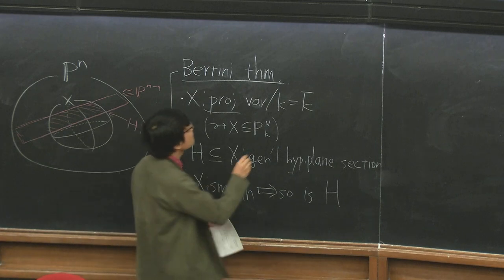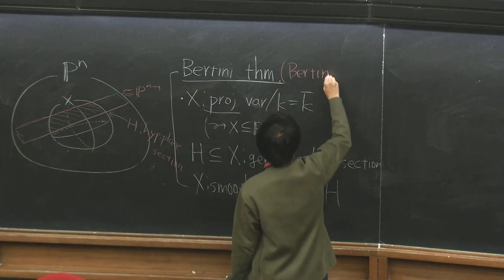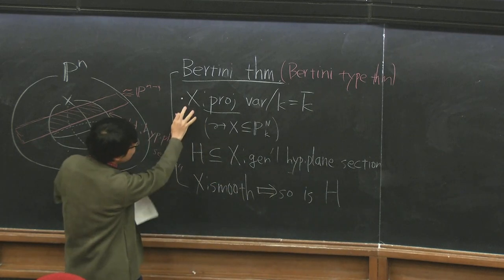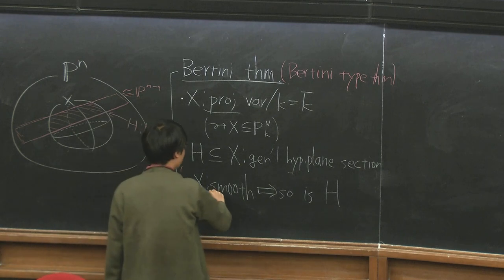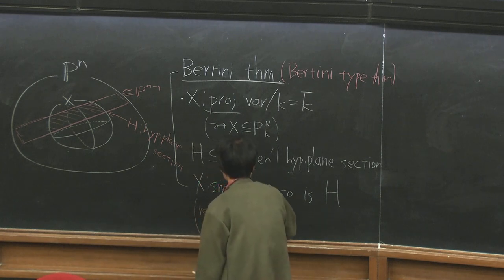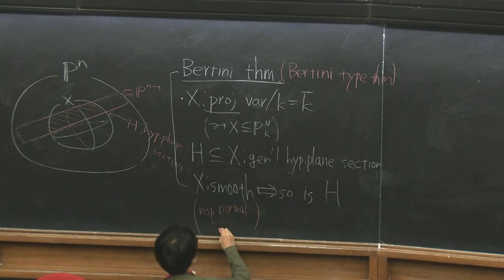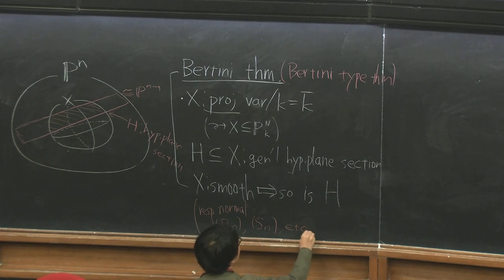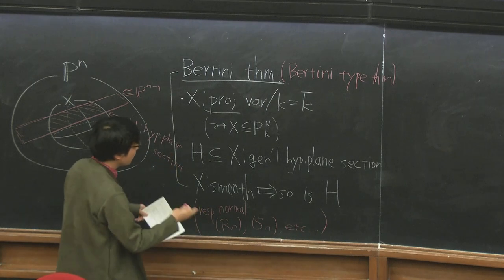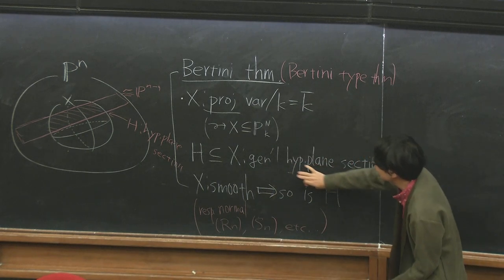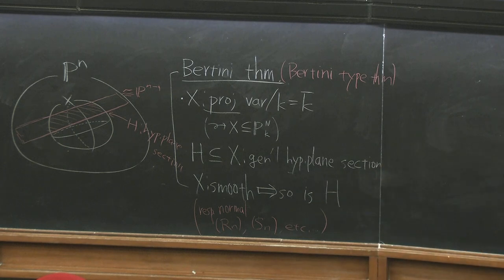There is also a variant of this theorem, called the Bertini-type theorem, which says that for the same setting, if X is normal then so is H. Moreover, if X is regular in codimension N, or satisfies the Serre S_N condition, or many similar local properties, then the general hyperplane section also has the same property.